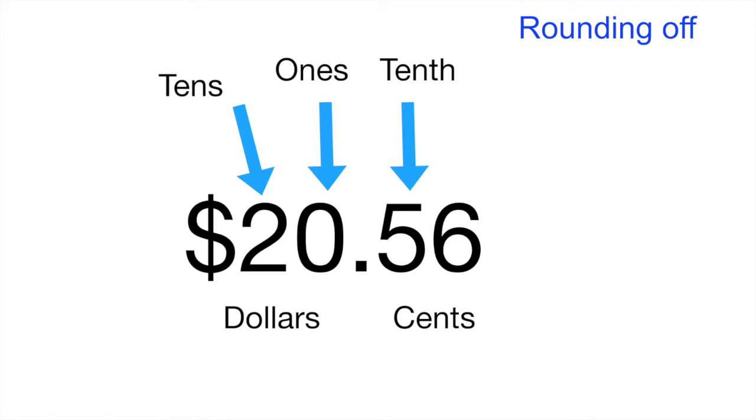And then finally, the third step is the rounding off. So we use decimals in our daily life, especially when we deal with money. If, for example, you had $20.56, you know that everything to the left of that decimal point is going to represent dollars. And that first position is going to represent ones, and the second position is going to represent tens. And if you look at the right of the decimal point, that's going to be cents. So the first position would be tenths, and then hundredths.